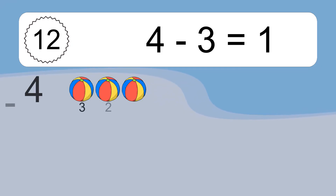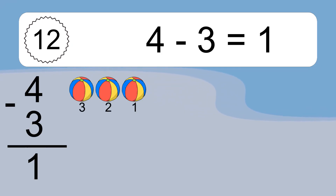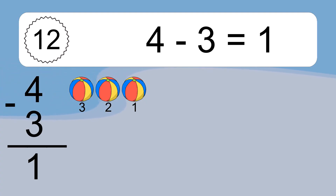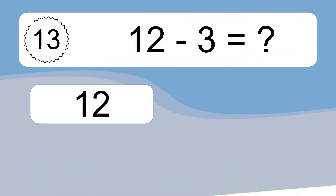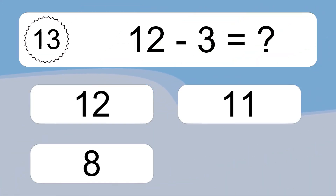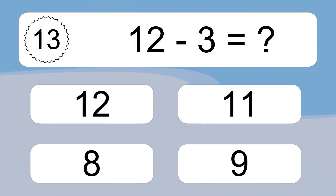4 minus 3 equals what? 4 minus 3 equals 1. Let's count it: 3, 2, 1.